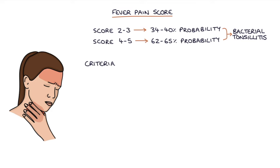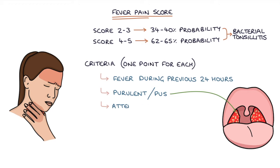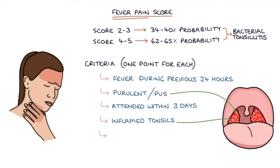The criteria of the FeverPAIN score can be remembered with the mnemonic FeverPAIN. One point is given for each of the following: F for fever during the previous 24 hours; P for purulent or pus on the tonsils; A for attended within 3 days of the onset of symptoms — a longer duration of illness suggests more of a viral infection; I for inflamed tonsils, and they have to be severely inflamed for this to count; and N for no cough or coryza. Coryza refers to the typical symptoms of a cold — blocked nose, runny nose, and sneezing — and if these cold symptoms are present, bacterial tonsillitis is less likely.